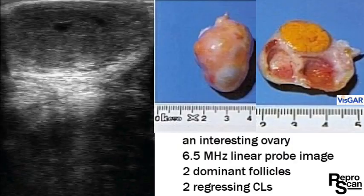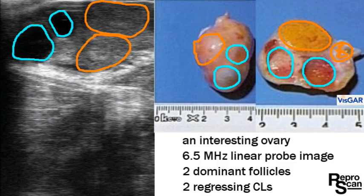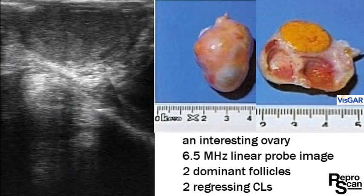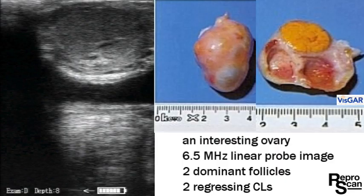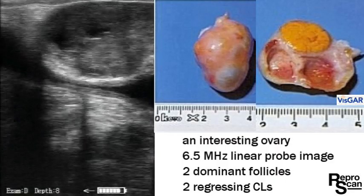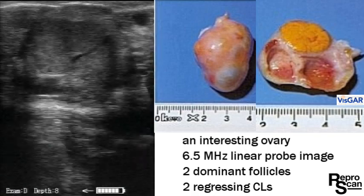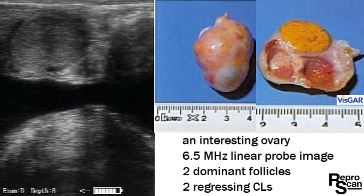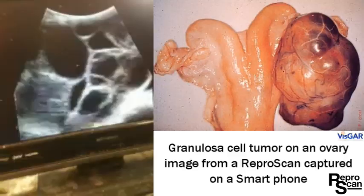Examination number two — an interesting ovary. This is a 6.5 megahertz linear probe image. We've circled two follicles in blue and two CLs in orange on the right. Looking more closely at the luteal tissue, the two follicles are fairly easy to see, and there's all that luteal tissue in a different gray color. Notice down below there's another hollow center, suggesting a second CL. This is from a cow that likes to have twins.